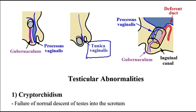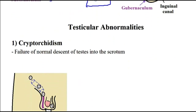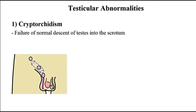Now with that information in mind, we can review cryptorchidism. Cryptorchidism is a failure of normal descent of the testes into the scrotum. On one side the testes has normally descended into the scrotum, but on the other side we have either abdominal, inguinal, or upper scrotal cryptorchidism.